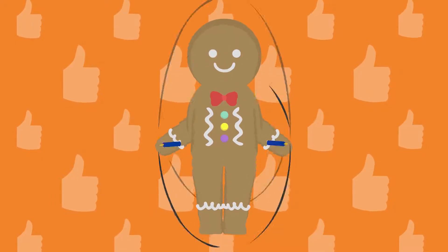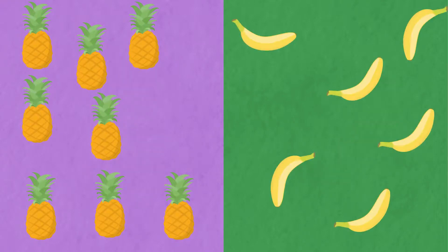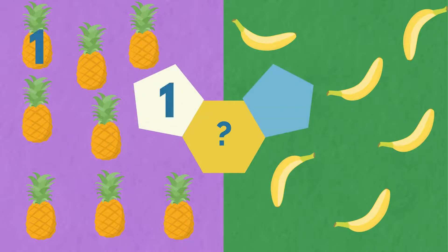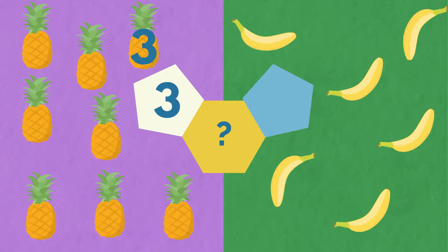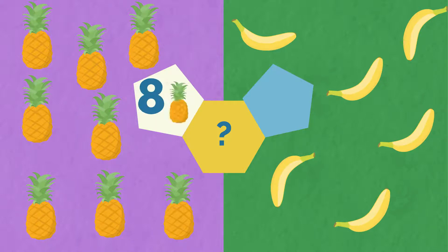The pears are the same number as the apples. Well done. Pineapple. Banana. Let's compare. One. Two. Three. Four. Five. Six. Seven. Eight. Eight pineapples.